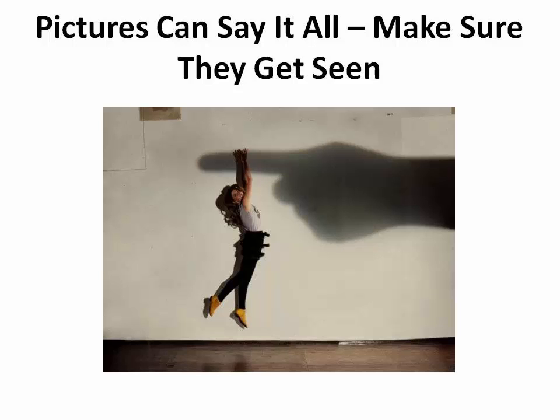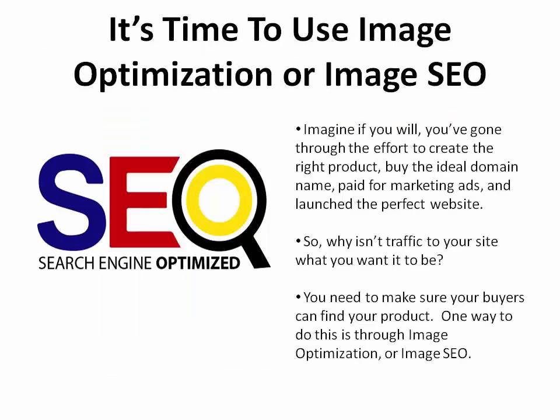To hold the customer's attention, most product descriptions need to be short and to the point. This means you want the photos to speak volumes. Imagine you've gone through the effort to create the right product, buy the ideal domain name, paid for marketing ads, and launched the perfect website — so why isn't traffic to your site what you want it to be? You need to make sure your buyers can find your product. One way to do this is through image optimization, or image SEO.